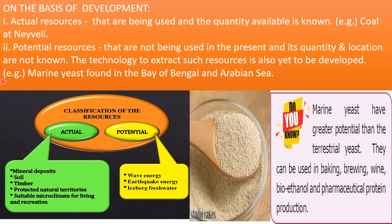The next classification of natural resources is on the basis of development. On the basis of development, resources can be categorized into actual resources and potential resources. What are actual resources? The resources that are being used and whose quantity available is known to us are called actual resources. That is, we can use the resources and we know where they are available and how to extract them. Examples are oil available in Middle East countries, the coal mines, and the iron mines.